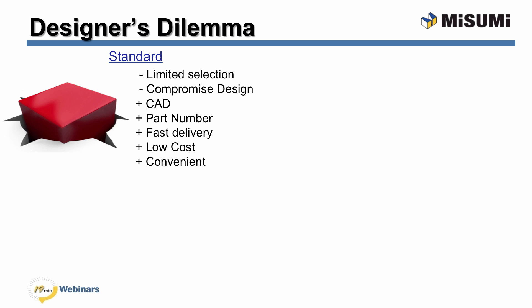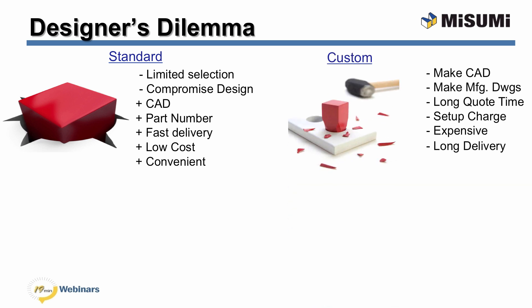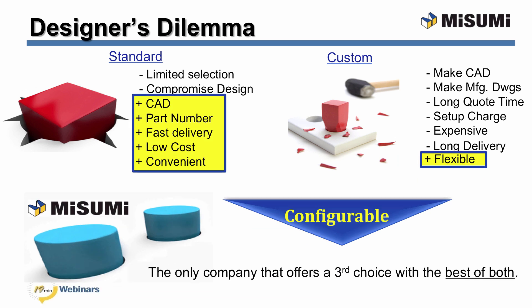The other choice is custom. Custom components have many drawbacks. Designers have to make the solid models themselves and all the manufacturing drawings. Purchasers too can attest to the long wait for quotes, the expensive setup charges for short runs, and the long lead times. We are forced to use custom components though because of the flexibility. Misumi offers configurable, which is the best of both — easy and flexible.